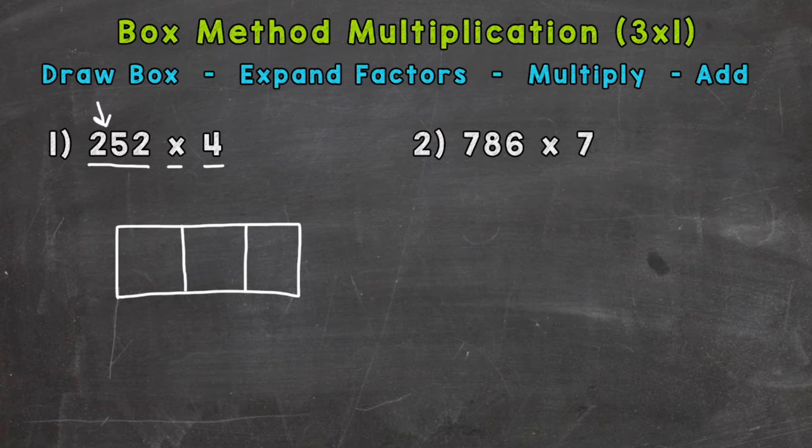we need to expand the factors. And what I mean by that, we're going to expand out and show the value of each digit within our factors. So you may be thinking, well, what is a factor? The factors are the numbers we're multiplying together in order to get our answer, which is called the product. So 252 is a factor and 4 is a factor.